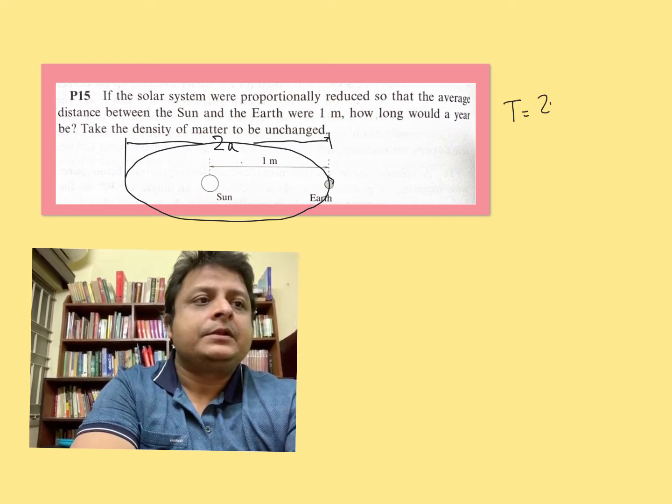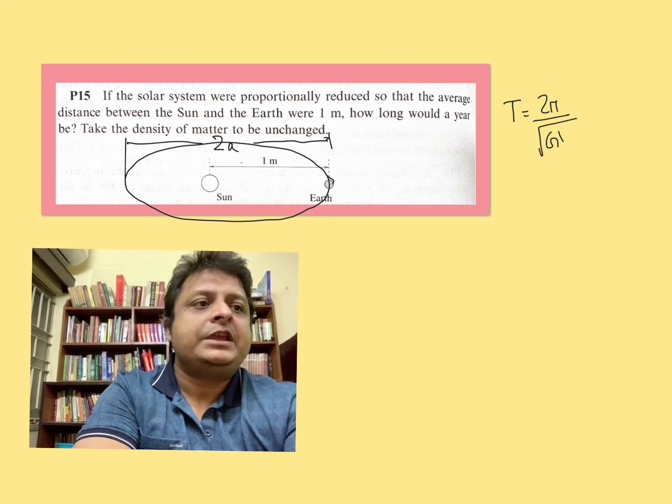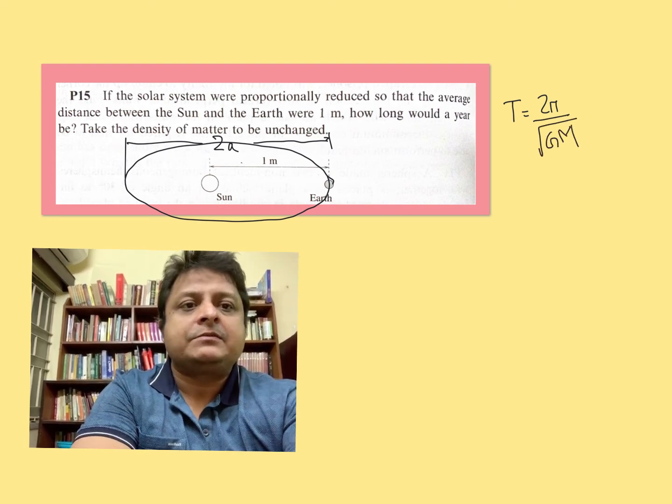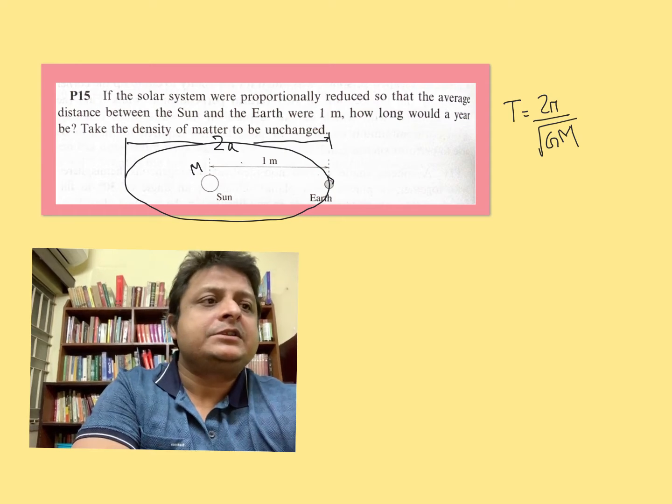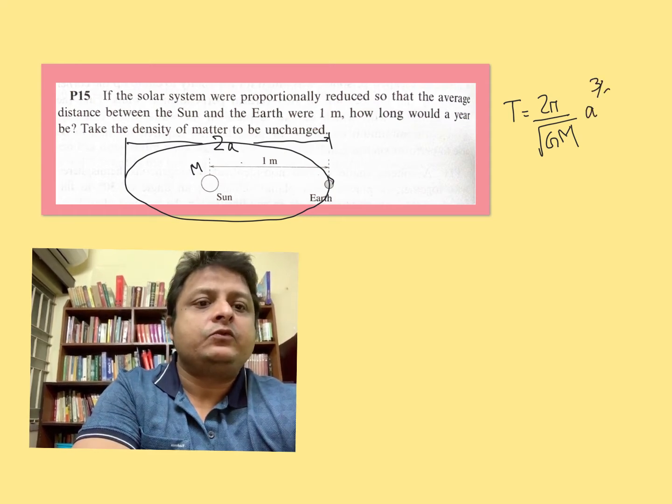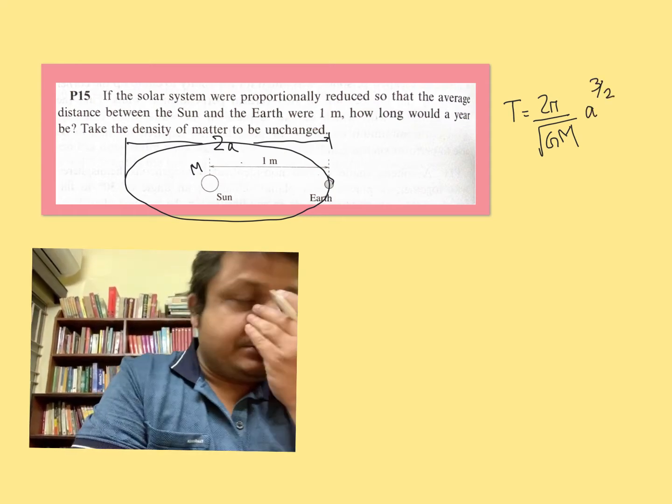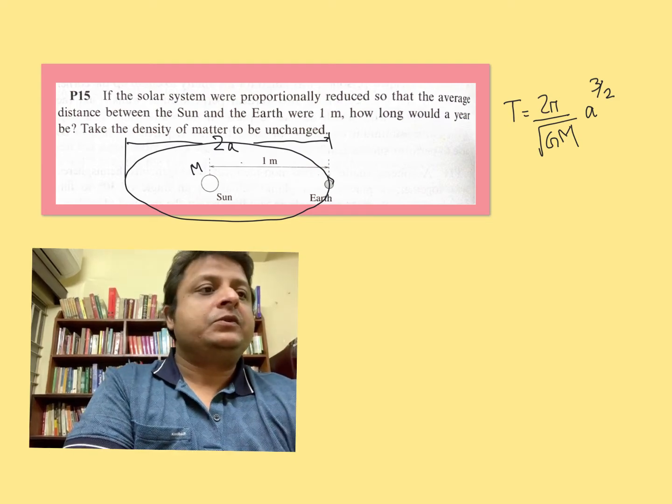So it is 2π divided by the square root of GM - capital M is the mass of the Sun - times a to the power 3/2.